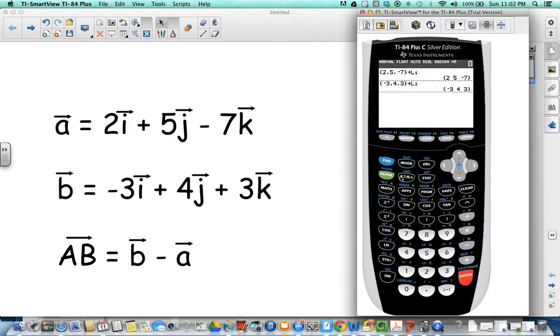And to do that subtraction, I would do second L2 minus list one, press enter, and there you have it. There is the new vector: negative five i minus j plus 10 k.